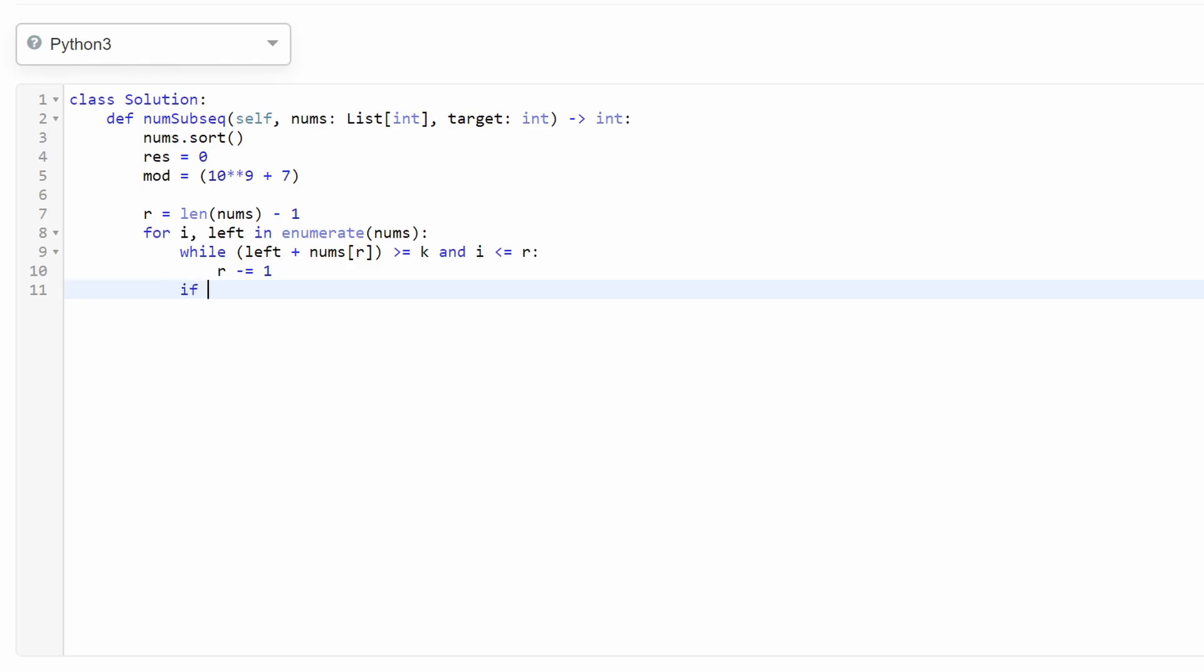So at this point, if our index is still less than or equal to right, meaning our pointer hasn't gone too far, it means we found some values, at least that we can add to this left most value that will be allowed in this subsequence. So now we need to count the total number. So to our result, we can add a value, we can add 2 to the power of some value, which is how many are included in the subsequence? How many choices do we have?